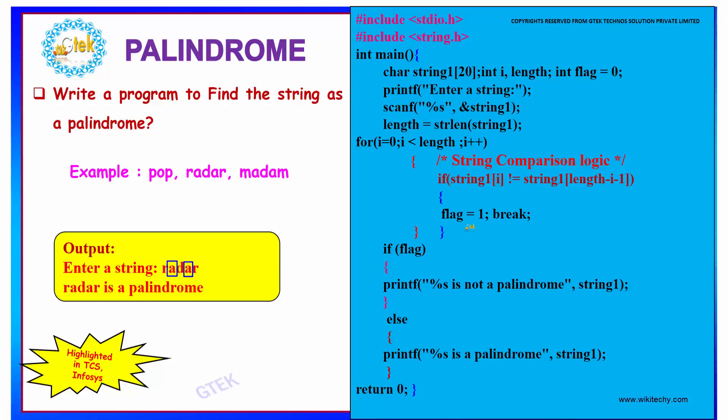So A and A are equal according to the condition. Since it is equal, we are further incrementing our for loop.